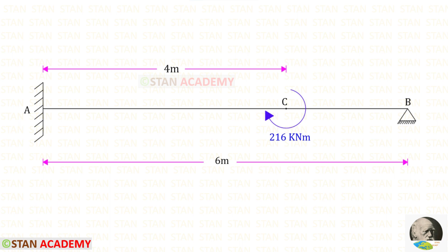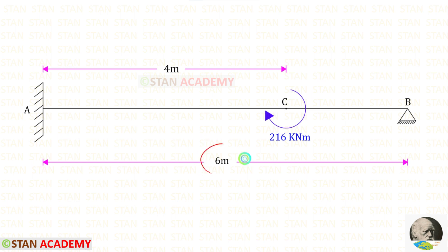Hello everyone. Today we are going to analyze this propped cantilever beam. In this beam there is a clockwise concentrated moment of 16 kNm, acting at a distance of 4 m from the left support. The span of the beam is given as 6 m.